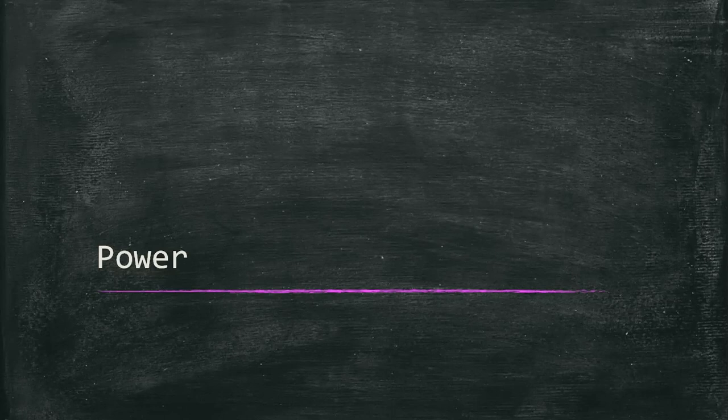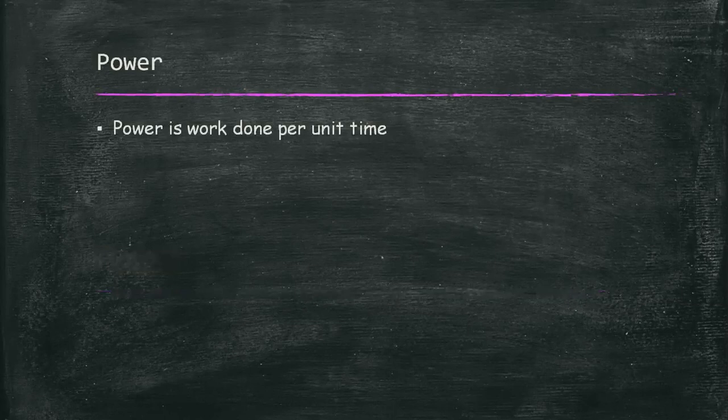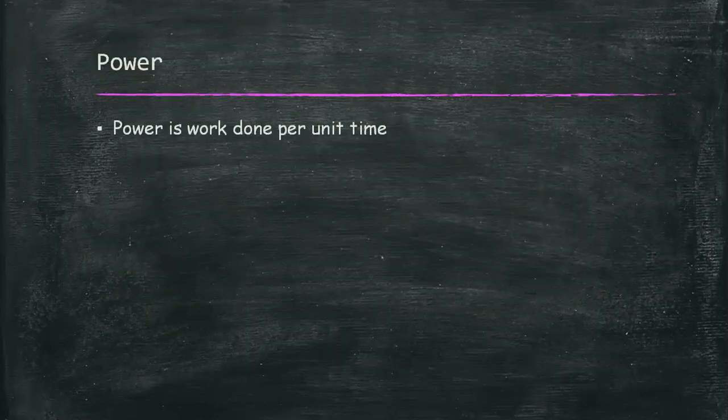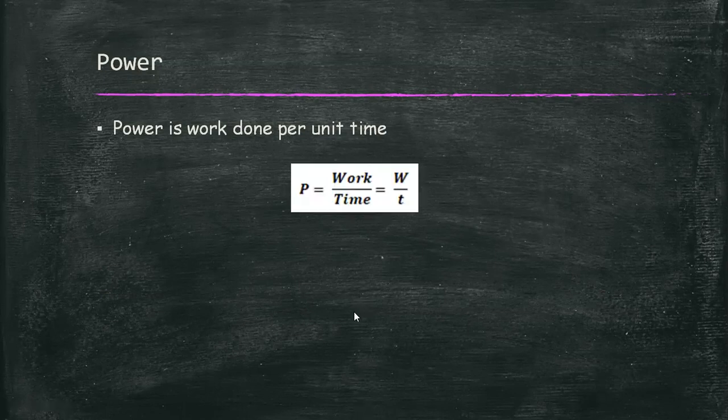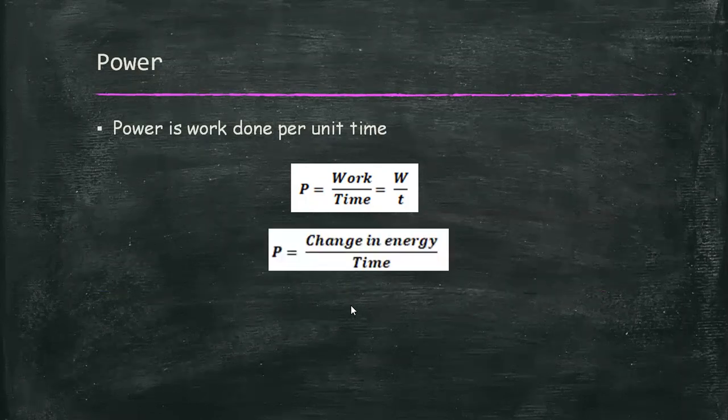The idea of power incorporates both the concept of work and time. Power is work done per unit time. The average power is the average rate at which work is done, and it is obtained by dividing work by the time it requires to perform the work. We can also define average power as the rate at which energy is changing, or as the change in energy divided by the time during which the change occurs.